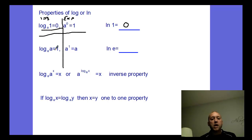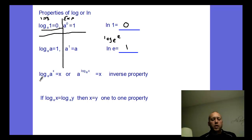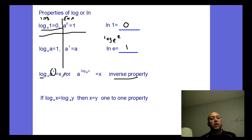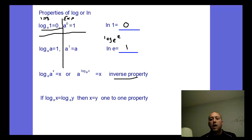Another property: log base a of a equals one. In exponent form, a to the first power equals a. The natural log of e is log base e of e, so log base e of e equals one. Also: log base a of a to the x equals x, and a to the log base a of x also equals x. These are inverse properties — they undo themselves. You have a log and an exponent with the same base: inverse operations give you the value x.